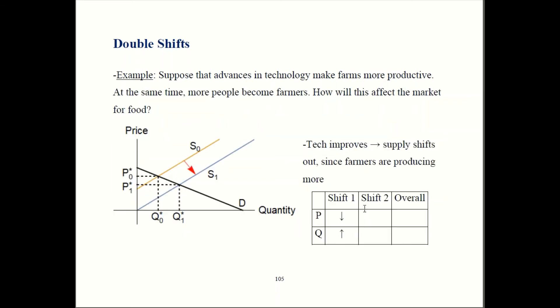We've got to analyze each effect separately. So, let's start out with the technology. If technology gets better, that makes firms more productive so now farms can supply more food. That's going to shift the supply curve outwards. We start out here at S0. Once technology improves, we produce more and now we're having supply at S1 instead.